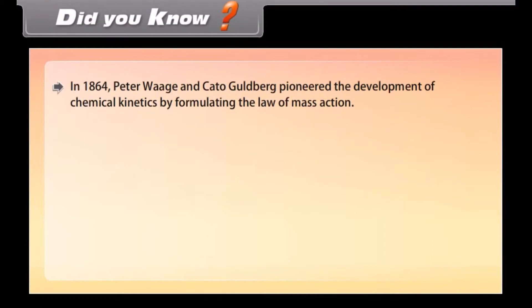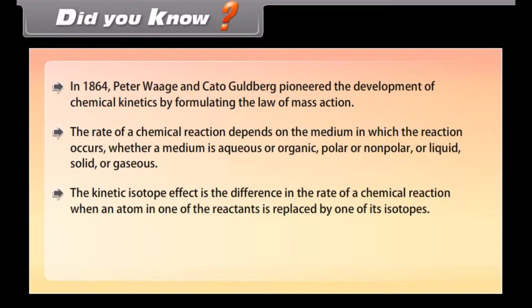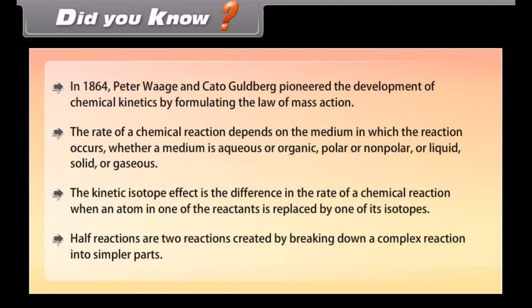Did you know? In 1864, Peter Waage and Cato Guldberg pioneered the development of chemical kinetics by formulating the law of mass action. The rate of a chemical reaction depends on the medium in which the reaction occurs, whether aqueous or organic, polar or non-polar, or liquid, solid, or gaseous. The kinetic isotope effect is the difference in rate of a chemical reaction when an atom in one of the reactants is replaced by one of its isotopes. Half reactions are two reactions created by breaking down a complex reaction into simpler parts.